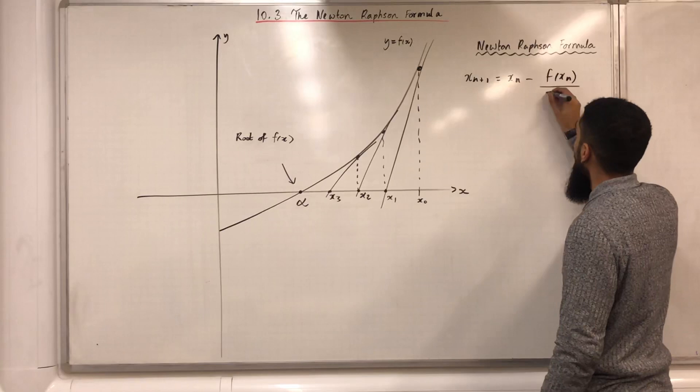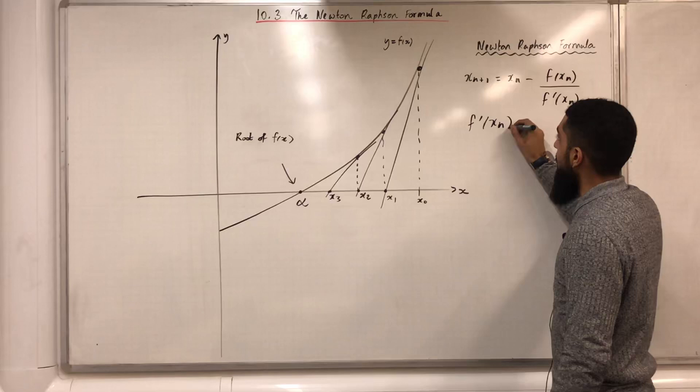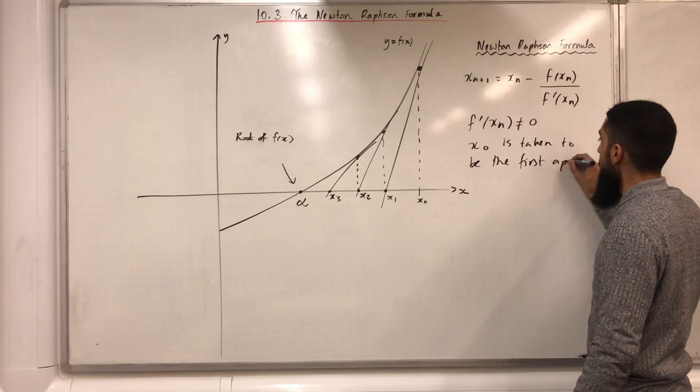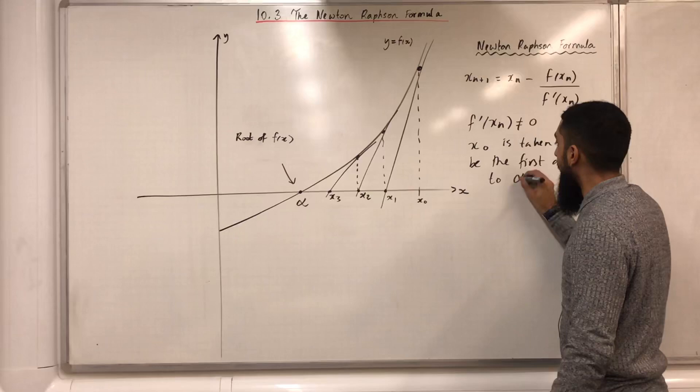Provided that f'(xn) is not equal to 0. x0 is taken to be the first approximation to alpha, where alpha is the root of f(x).